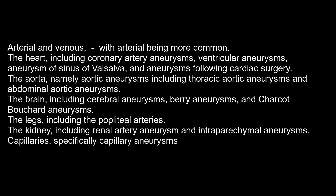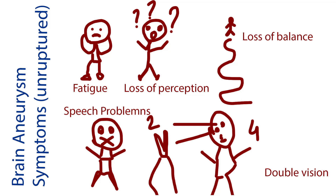Aneurysms may have different locations — arterial or venous — with arterial being more common. Locations include the heart including coronary arteries, the aorta (thoracic and abdominal aortic aneurysms), the brain, the legs, the kidneys, and capillaries.